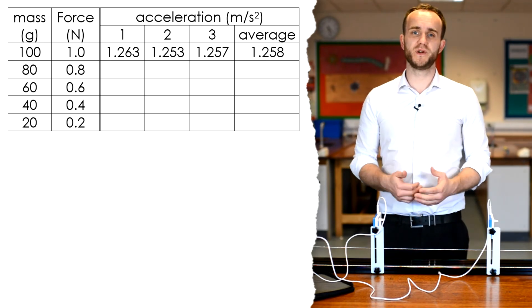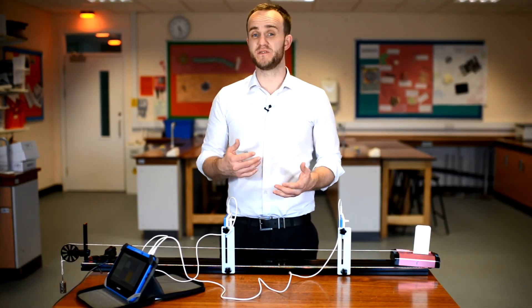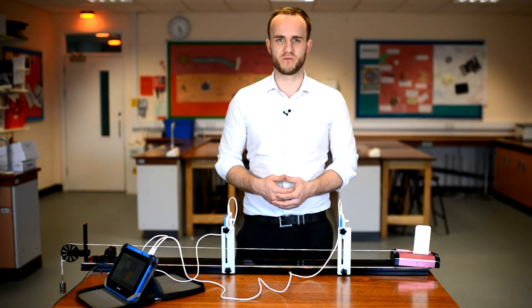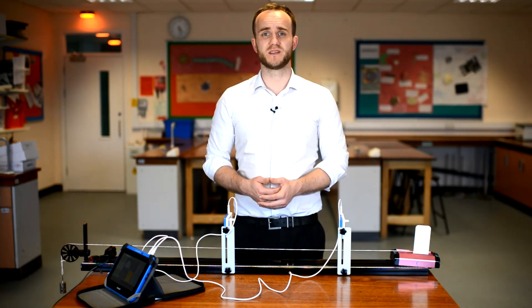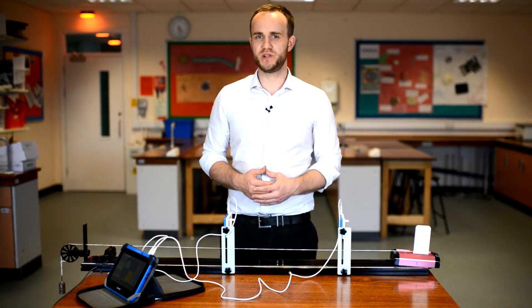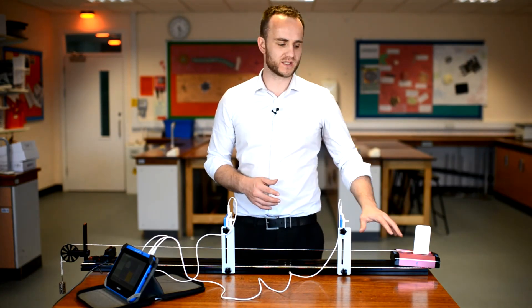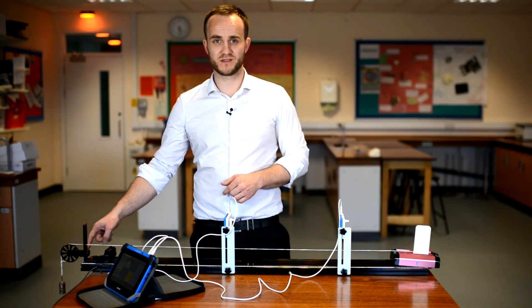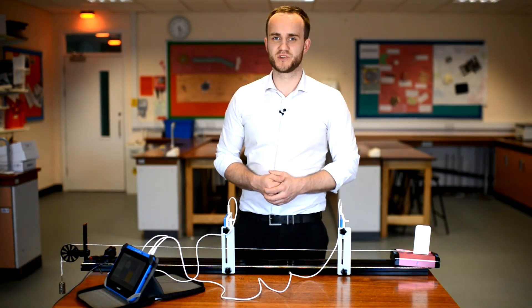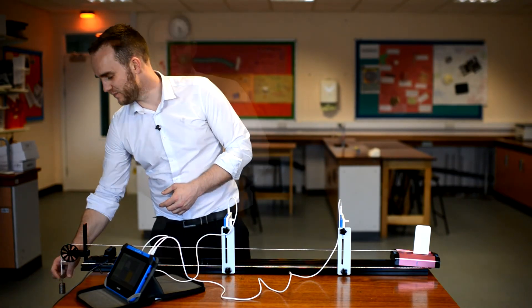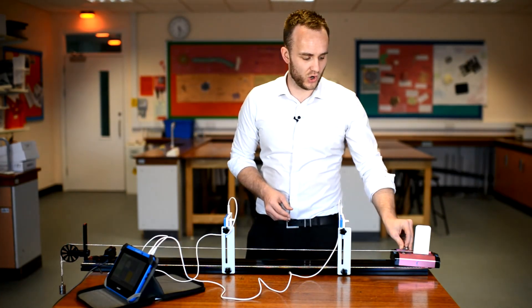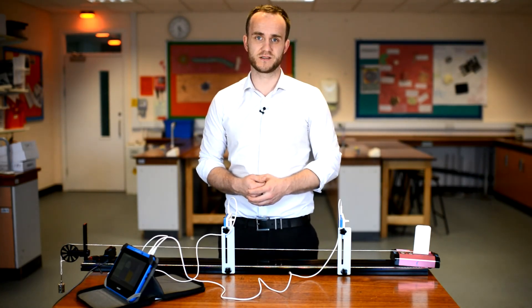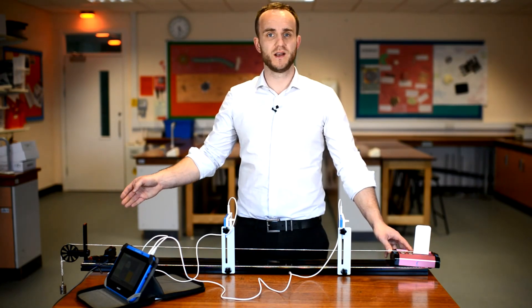Now we're going to remove some masses from the hanger. I'm going to remove 20 grams, giving five different readings overall — you can take more for more reliable results. Importantly, the one Newton of force was accelerating both the trolley and the masses themselves, so when we take 20 grams off the hanger we need to place them on the trolley to keep the overall mass constant. Now I have 80 grams on the hanger, giving an accelerating force of 0.8 Newtons.